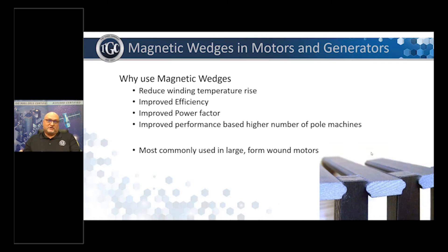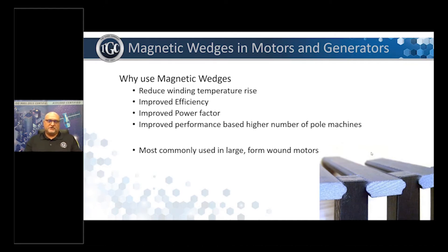When we aren't using magnetic wedges properly — when a motor was designed to have magnetic wedges and you take them out and replace them without magnetic wedges — one of the most obvious signs is an increase in the operating temperature of the machine, in some cases as much as 20 or 30 degrees C, which is quite a difference that end users are going to see.